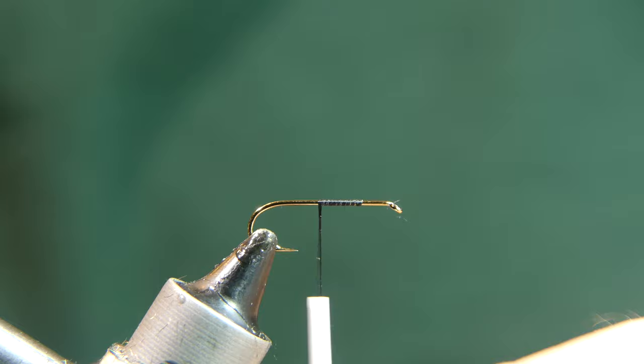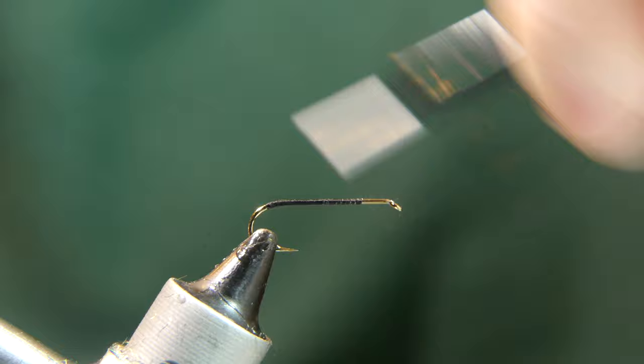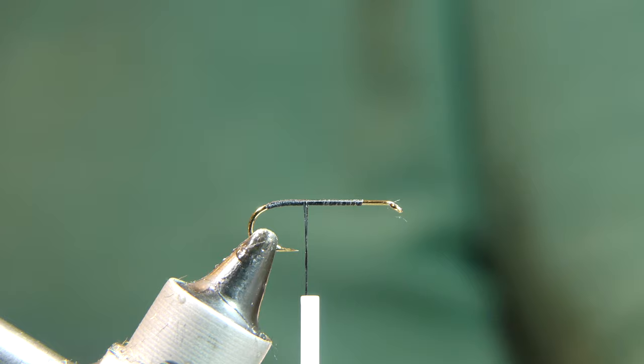Go ahead and start your thread on, wrap it back, cut away your tag end, and then continue to wrap it back to the top of the bend of the hook. Bring the thread back to around the hook point and park it there.